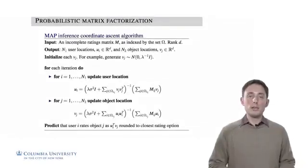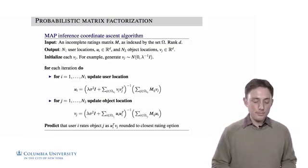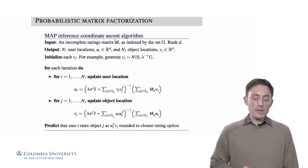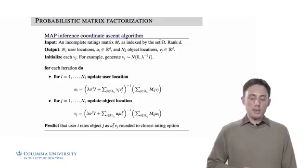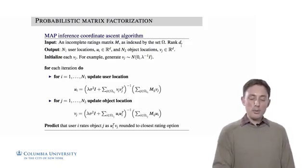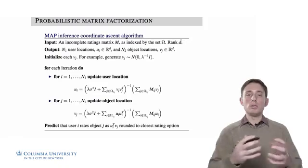Here's the coordinate ascent algorithm for doing MAP inference for the probabilistic matrix factorization model. We have as an input an incomplete ratings matrix M, where the measurements in M are indexed by omega, and we also input a rank D that we want to learn, the dimensionality of this latent space that we want to embed all of these users and objects into.